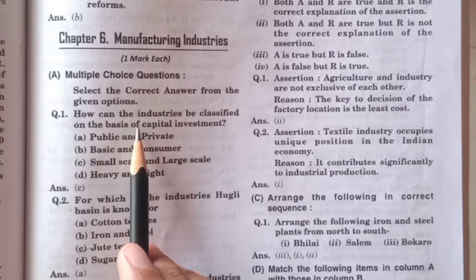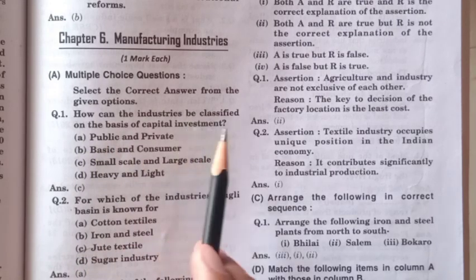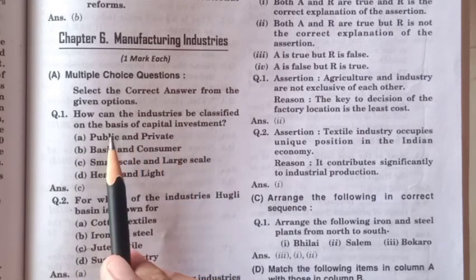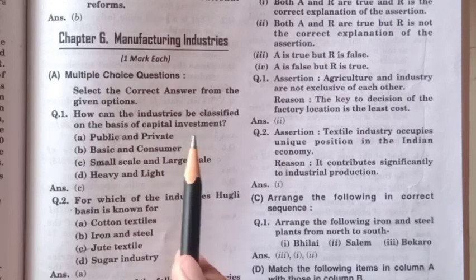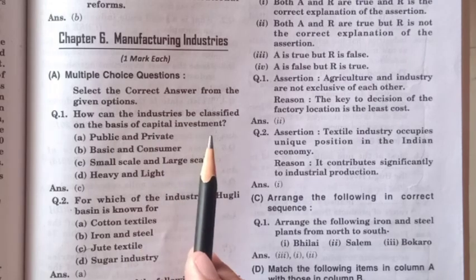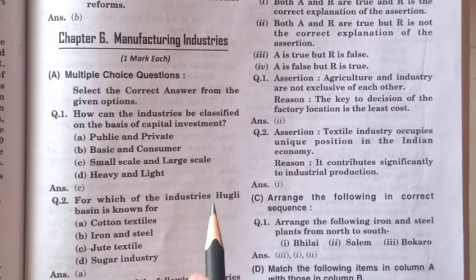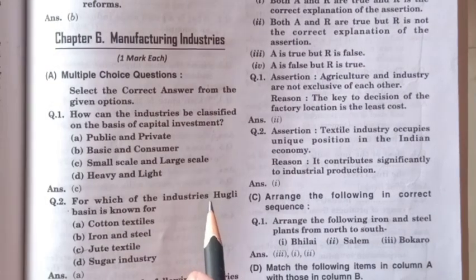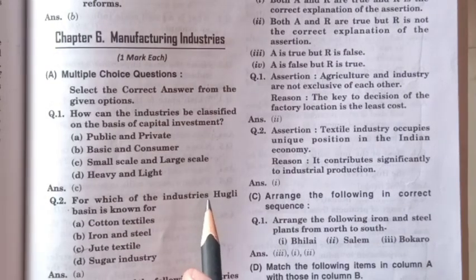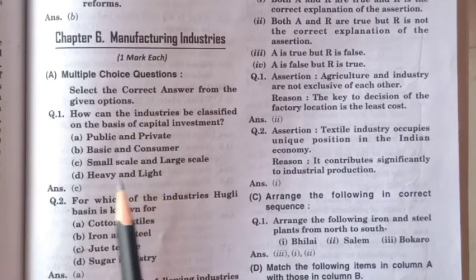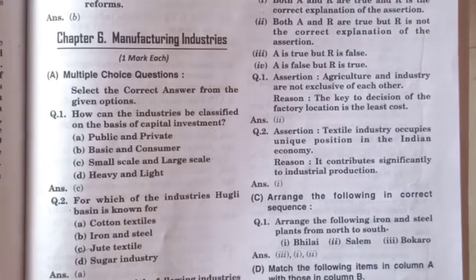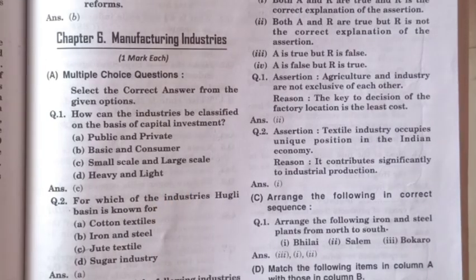How can the industries be classified on the basis of capital investment? On the basis of capital investment, we can classify our industries into two parts: first, small scale, and second, large scale industries.